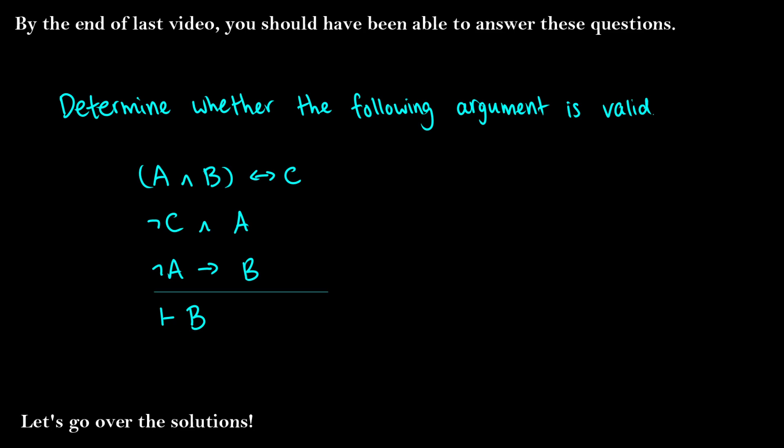In the last video, we learned how to determine whether an argument is valid using a truth table. We'll go over the solutions to this question in this video. As always, if you enjoy the channel and it helps you out, you can support it by joining as a member below for $2 or $5 Canadian a month. If not, you can always like, share, comment, and that helps just as much, so I appreciate you no matter how you support the channel.